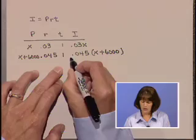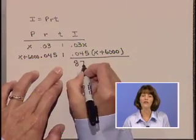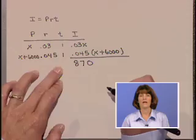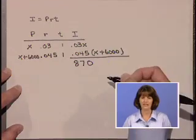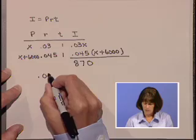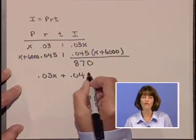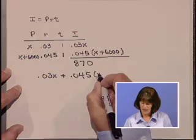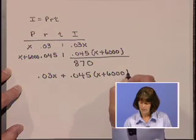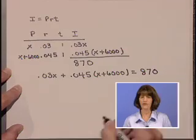And together, these two interest amounts total the $870. Our equation then comes from this last column, where we say that the total of these amounts, .03X plus .045 times (X + 6,000), is equal to $870.